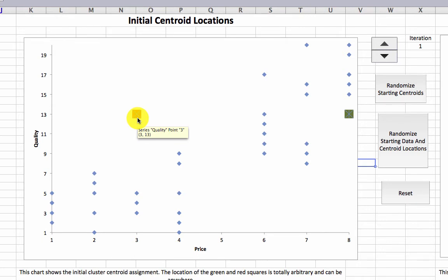The way cluster analysis works is you specify how many clusters you want. In this case, we'll just look at two. Then it creates two randomly located centroids. If I click this randomize button, you can see that it really doesn't matter where I start. It's just going to randomly locate them.